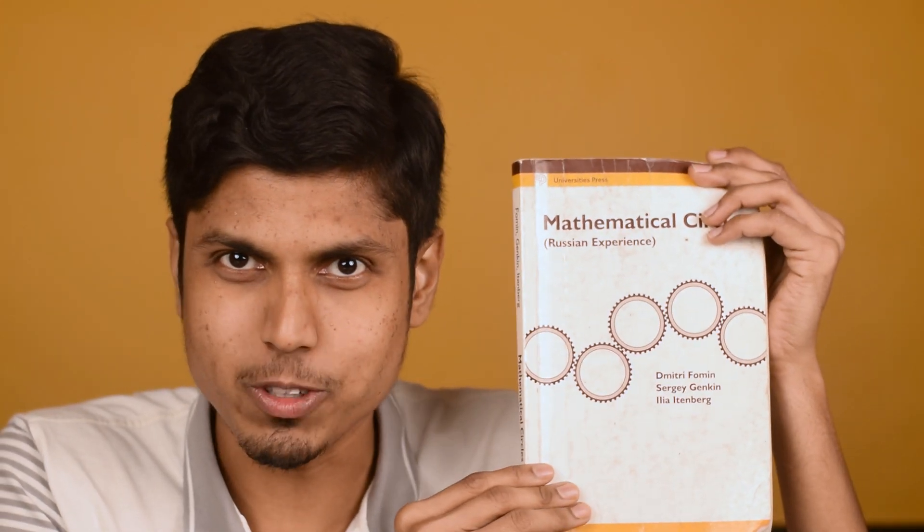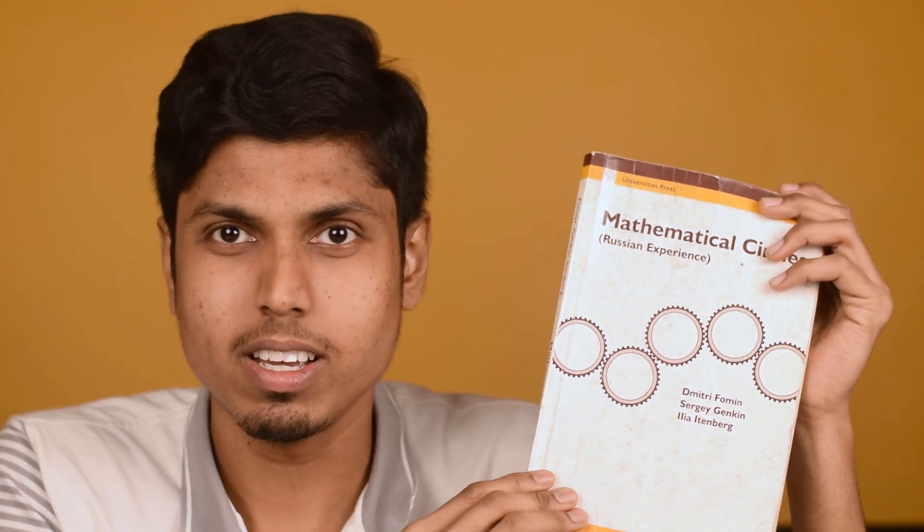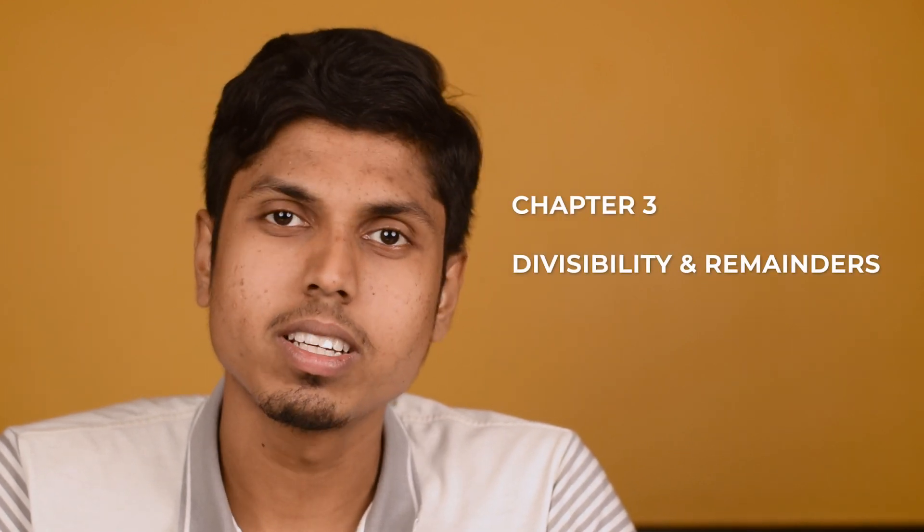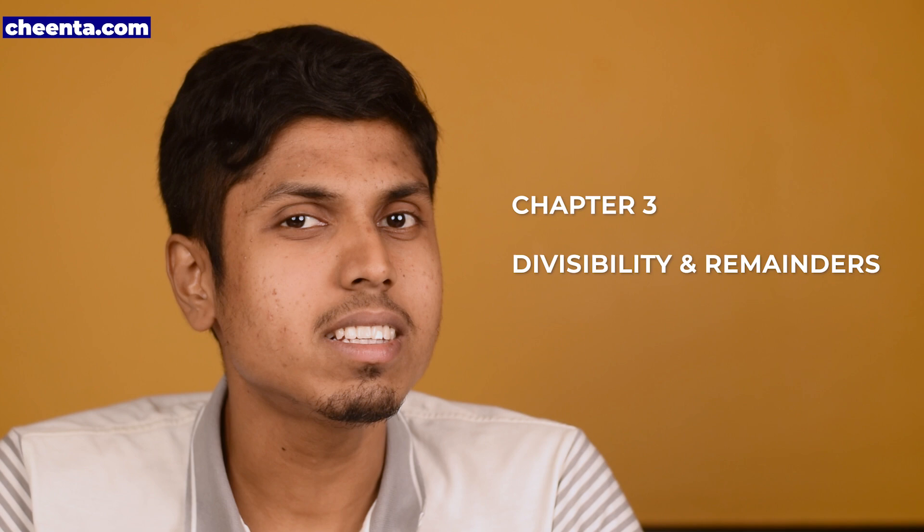Hello everyone, today we are going to solve a problem from the Russian Math Circles book. This book is written by Dimitri Fomin and contains a lot of problems related to Olympiad level. This problem is from the chapter Divisibility and Remainders. It is chapter number three of this book and I highly suggest this book for Olympiad aspirants in mathematics.